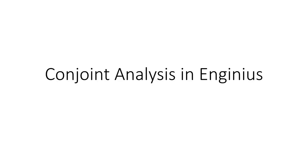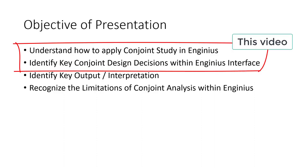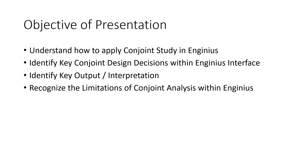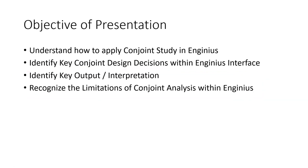Let's see an example of conjoint analysis being performed in the InGenius software platform. In this presentation, we're going to understand how to apply a conjoint study within InGenius, identify key conjoint design decisions within the InGenius interface, look at some of the key output and interpret that output, and recognize some of the limitations of conjoint analysis within InGenius. It's important to keep in mind that while we're focusing on using conjoint analysis in InGenius, we are going to be talking about conjoint analysis more generally the whole time.